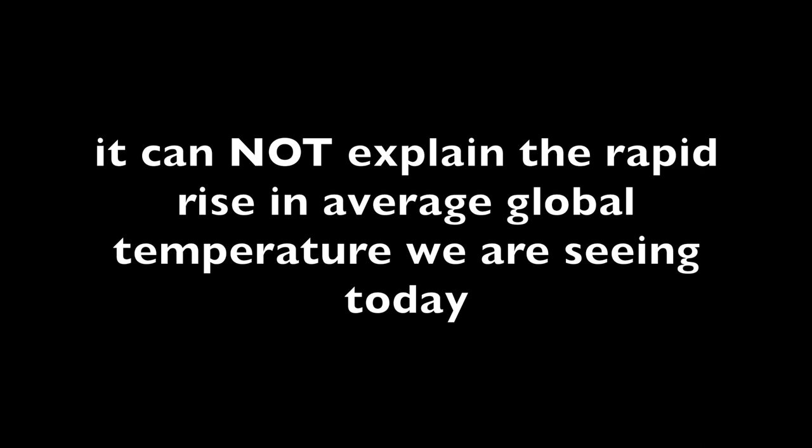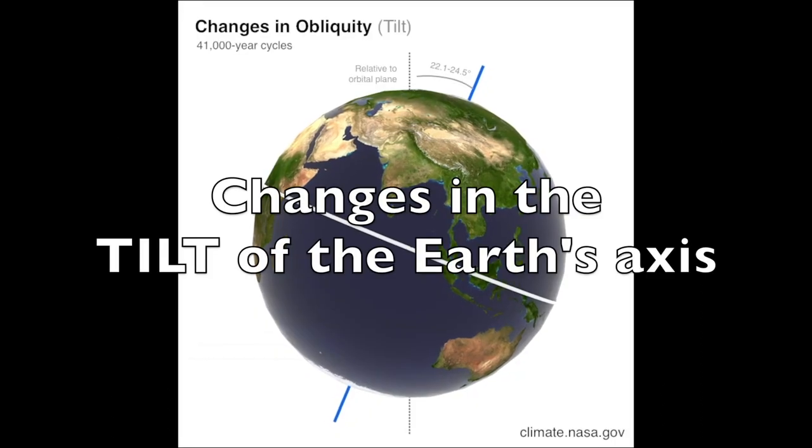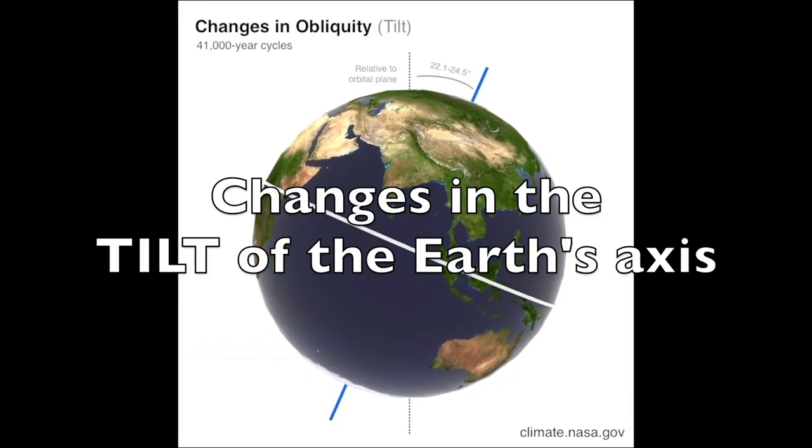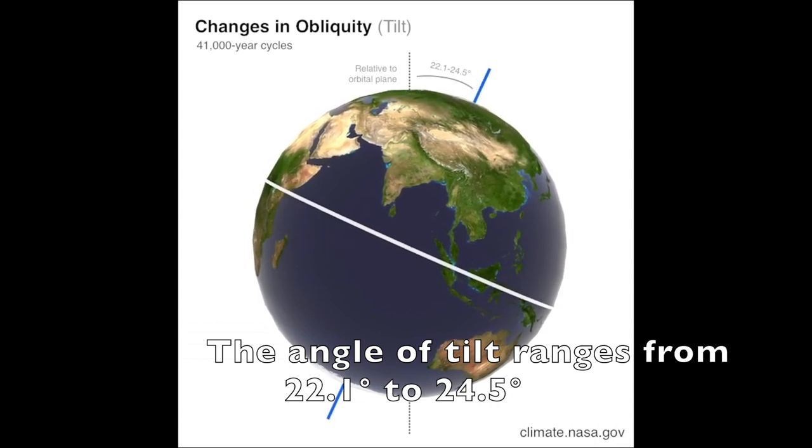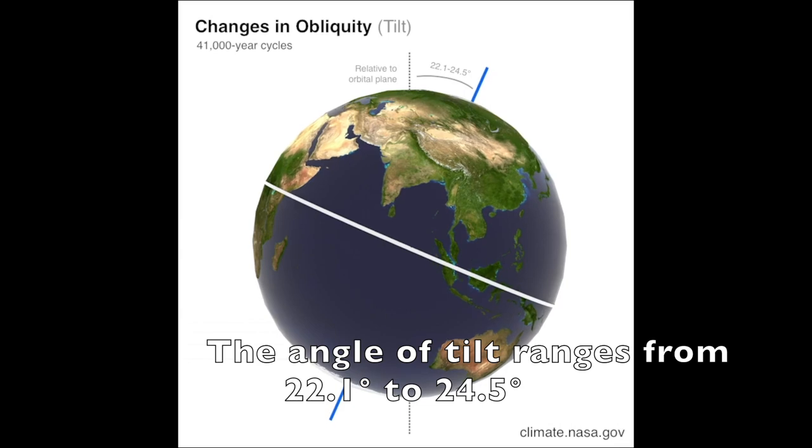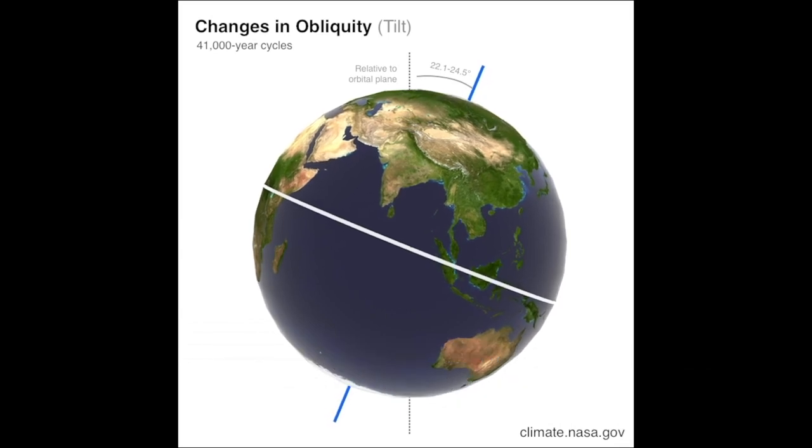The second of these cycles relates to changes in the tilt of the Earth's axis. The angle of tilt ranges from 22.1 degrees to 24.5 degrees. We call this obliquity.